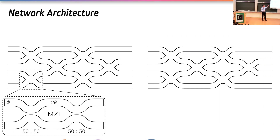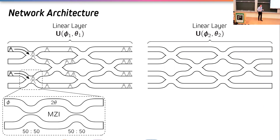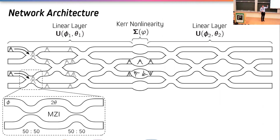Starting with the network architecture, we have two meshes of Mach-Zehnder interferometers where each interferometer consists of two phase shifters and two 50/50 directional couplers. These interferometers generate interference between the photons — one photon comes in and, in superposition, has some probability of moving throughout the network in different routes, eventually producing some probability of having one or two photons in each mode. This is just the linear piece, giving us the linear layers of the network. To add interaction between the qubits we need a non-linear component: a Kerr non-linearity, where one photon leaves with no phase change but if two come in they each leave with a phase change of phi.